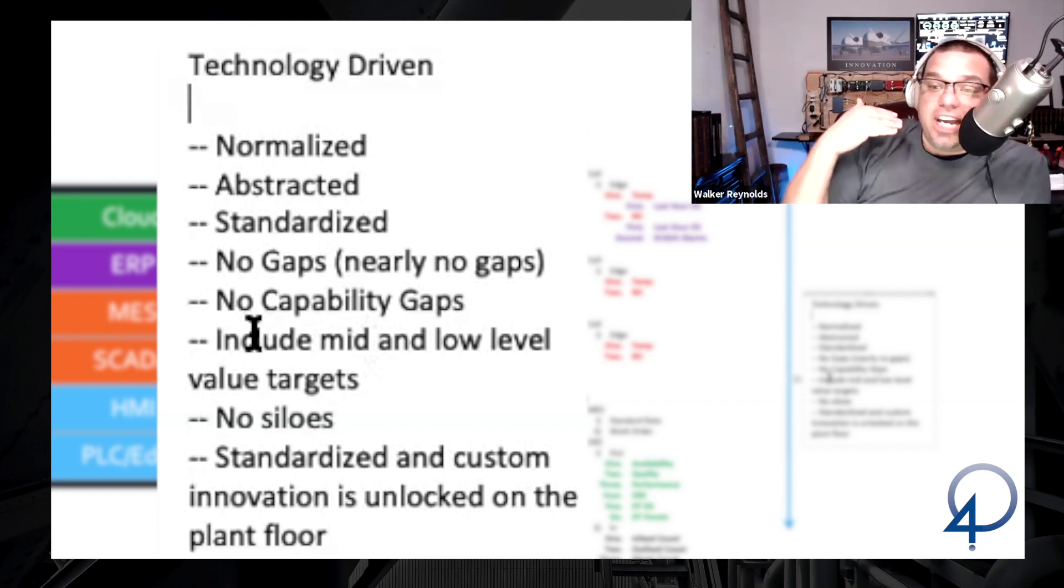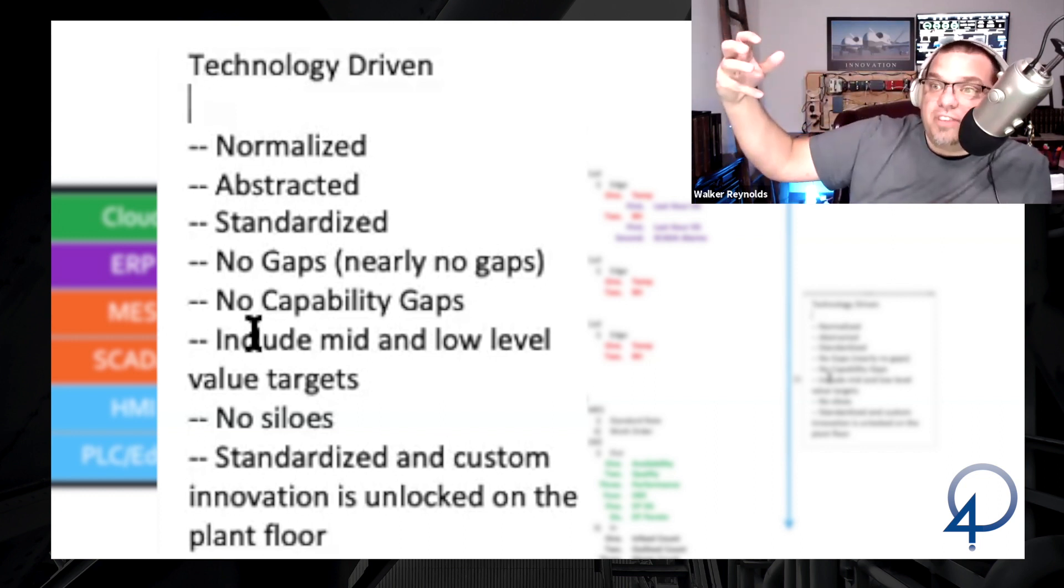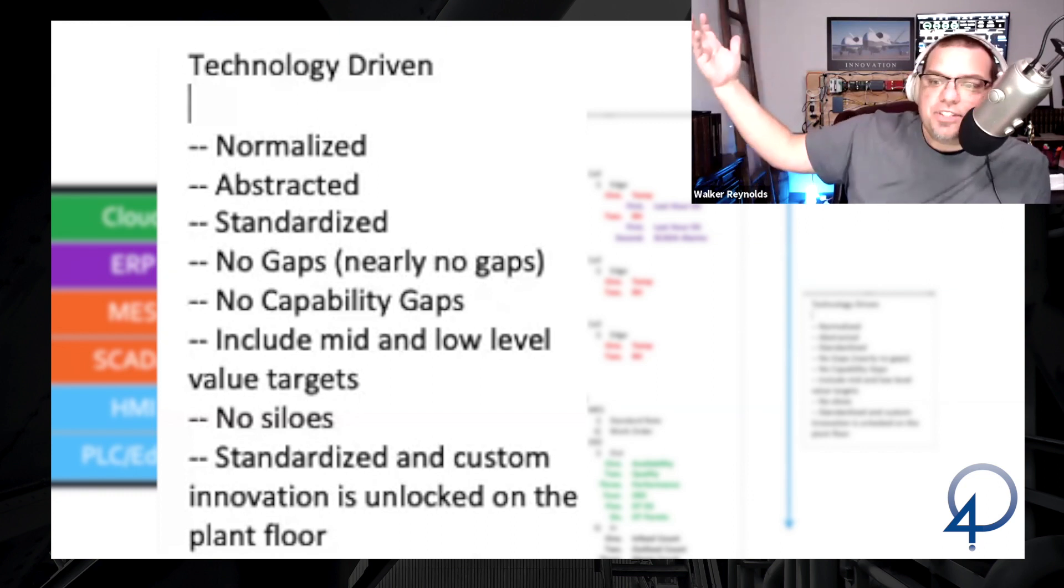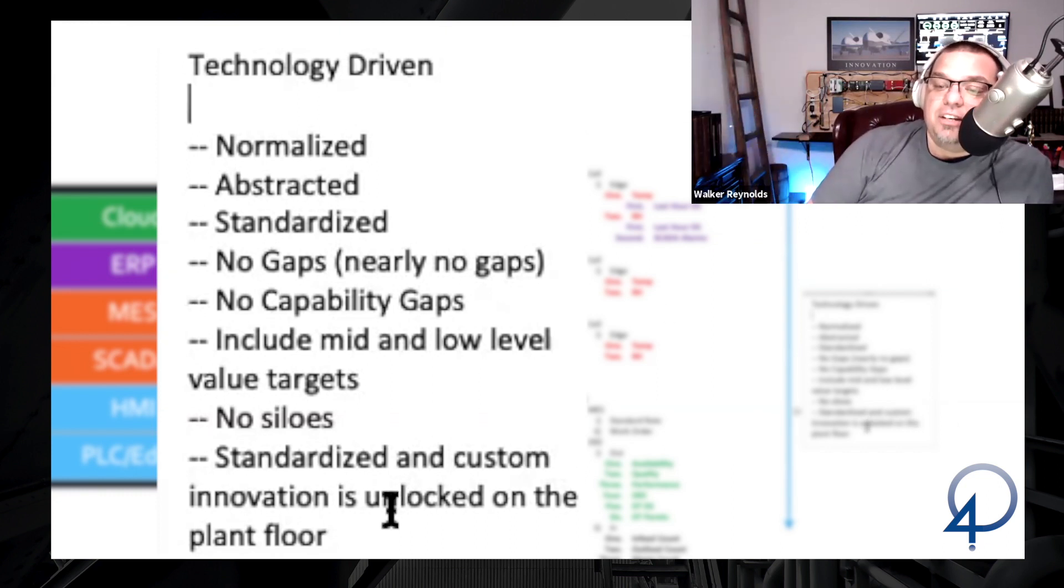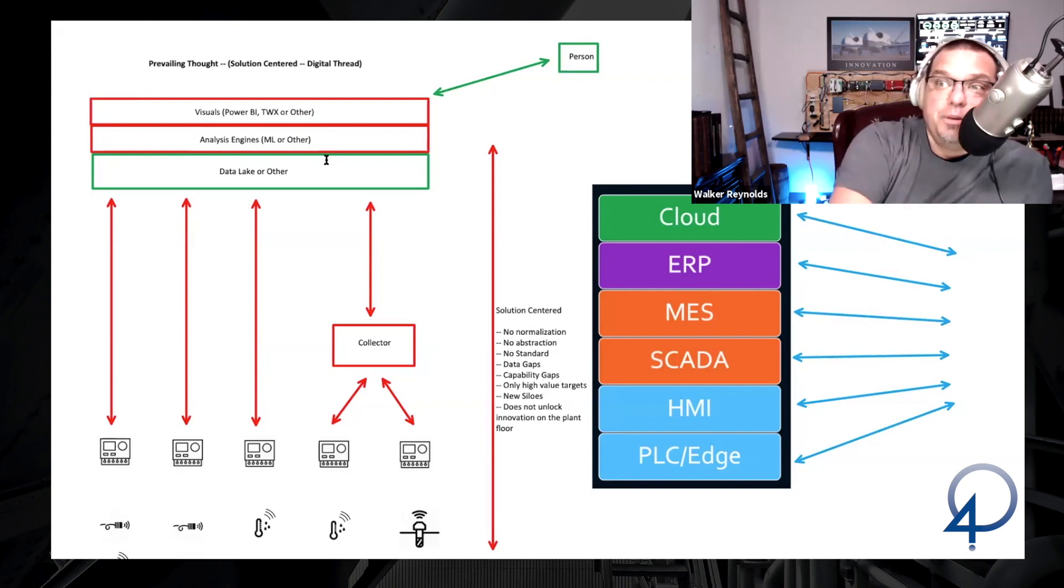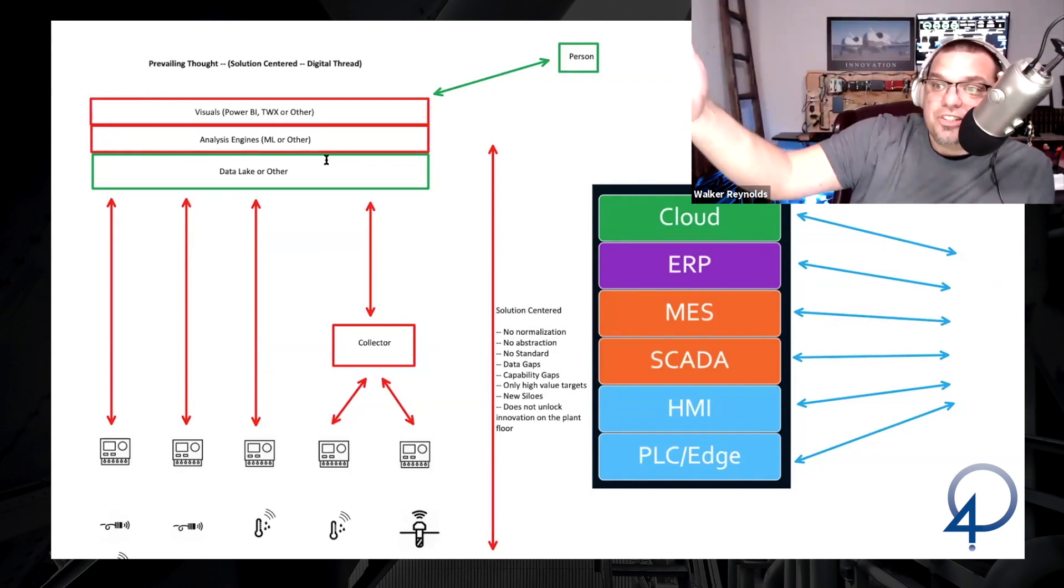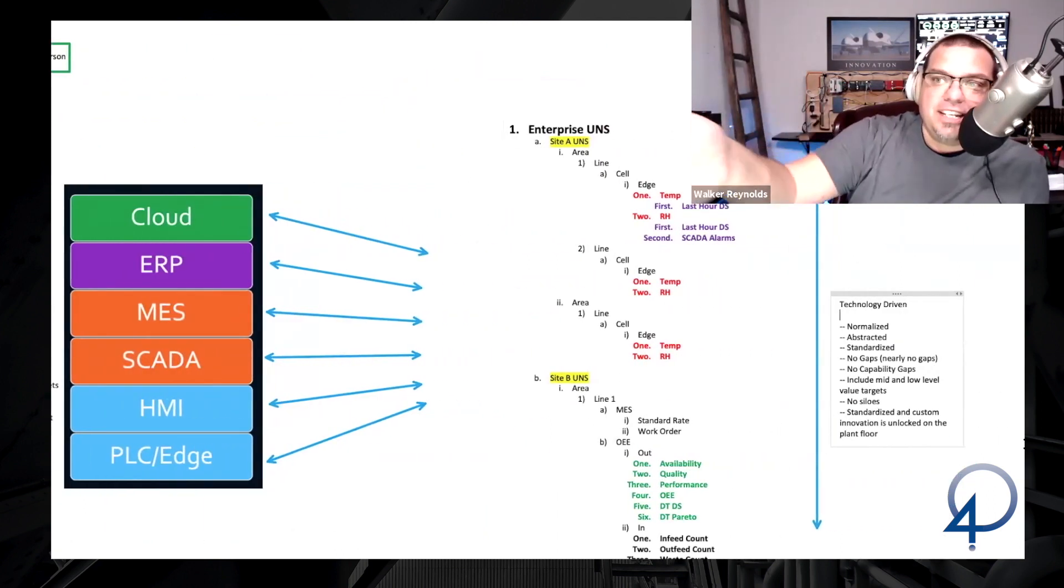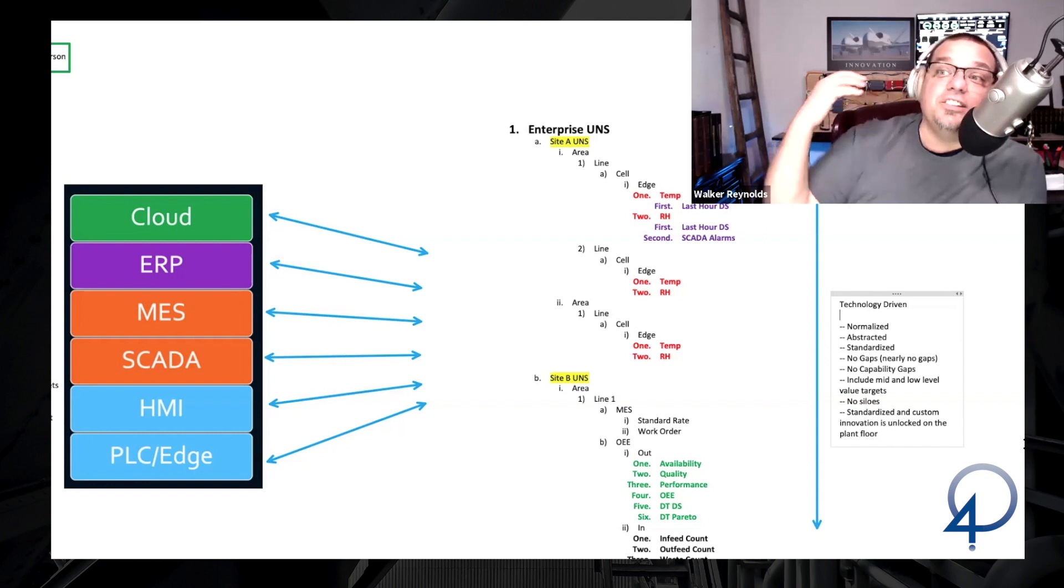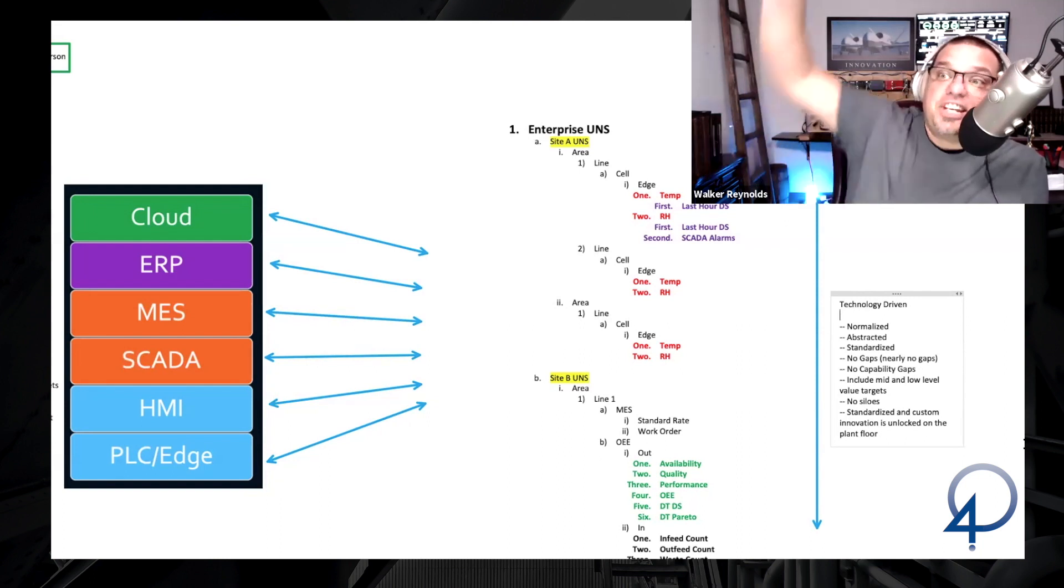No capability gaps. It's going to include mid- and low-level value targets. What is a target? It's a potential project, a potential solution you could develop in the ecosystem. No new data silo. In fact, you're unifying all the data into one big, massive silo, and you have standardized and custom innovation is unlocked on the plant floor. So standardized means the stuff you would build using a digital thread, that is standardized solutions. The stuff that you would build on the plant floor to test a John Sindrich idea, that is a custom solution. He has access to the data. He has access to the namespace. He can develop a solution and test it. And then if the business decides that that is going to provide enough value, you can scale it up to the business and apply it in other places.